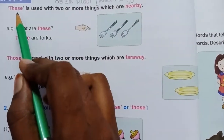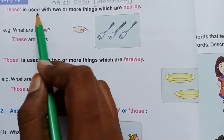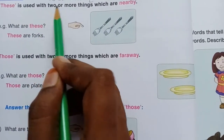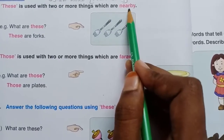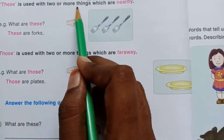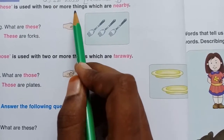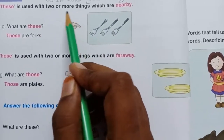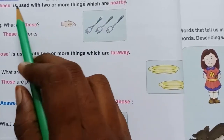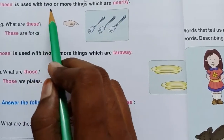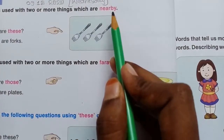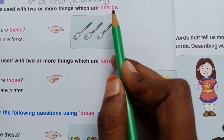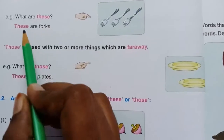'These' is used with two or more things which are nearby — so two or more things means plural things. 'These' is used with two or more things which are nearby. Nearby means near to us. For example, see here.